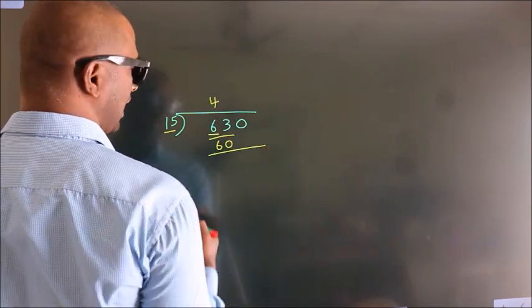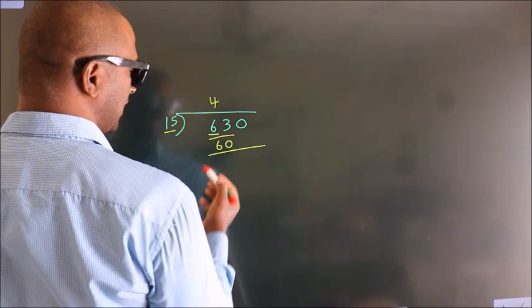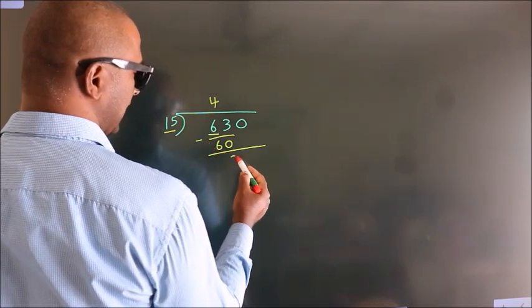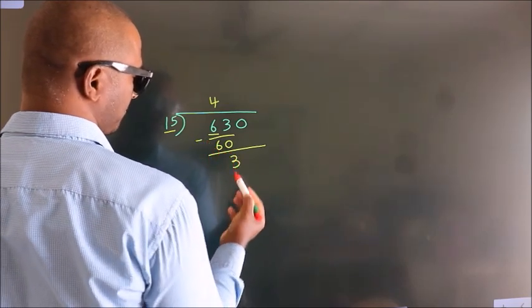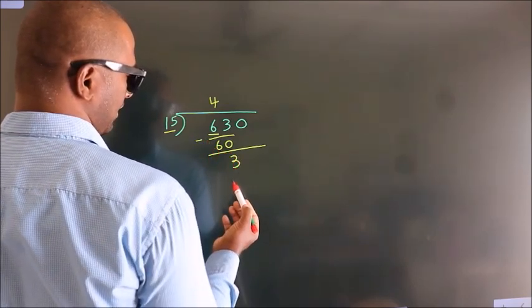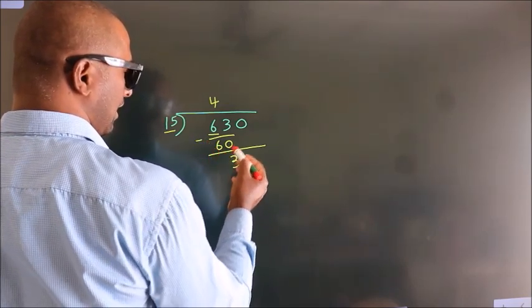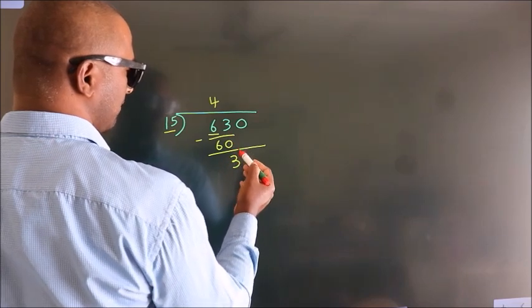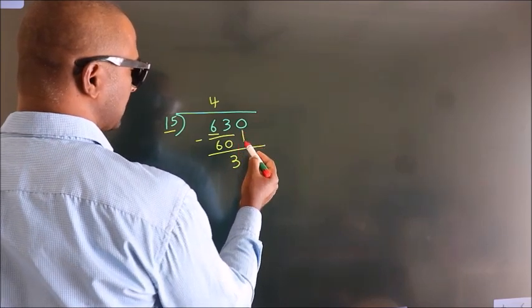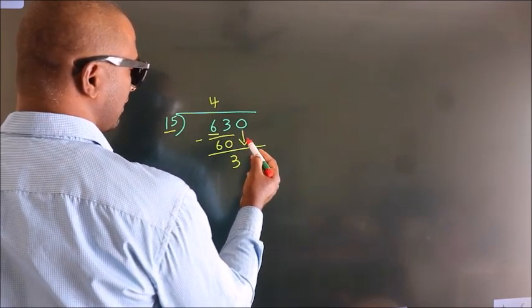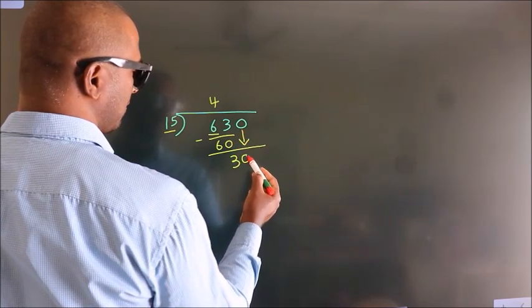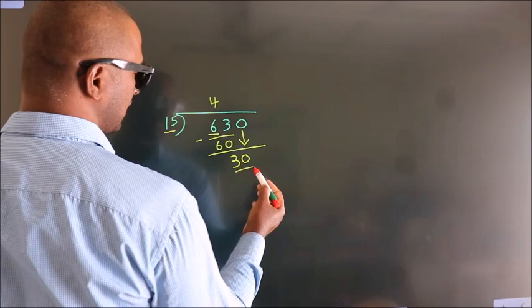Now we should subtract, and we get 3. After this, bring down the beside number. So 0 comes down, giving us 30.